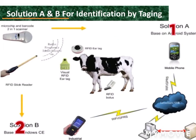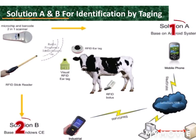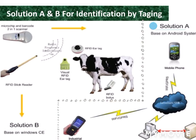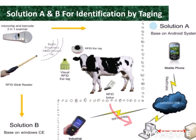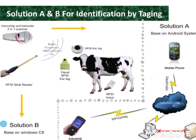We can adopt two solutions for identification of animals. Solution A is a modern system connected with devices, a useful method. Solution B is a unique method that includes an RFID stick reader, microchip, and broadcast signaling system for identification purposes.